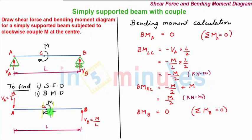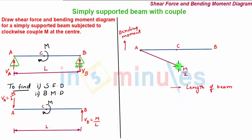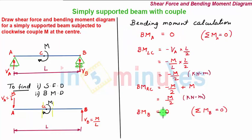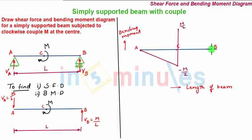The bending moment slightly to the right of C is plus M/2. So the bending moment changes from minus M/2 to plus M/2 at C, connected by a vertical line. Since the bending moment at B is 0 and there is no force acting between C and B, we connect the right-of-C value to B with a straight inclined line. With this, the bending moment diagram is complete.